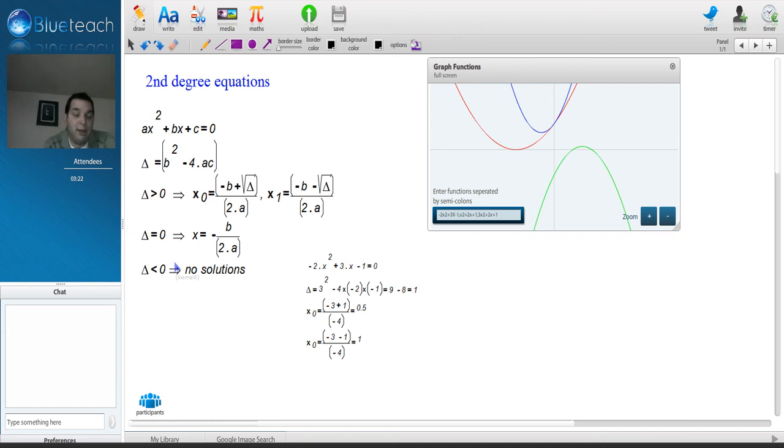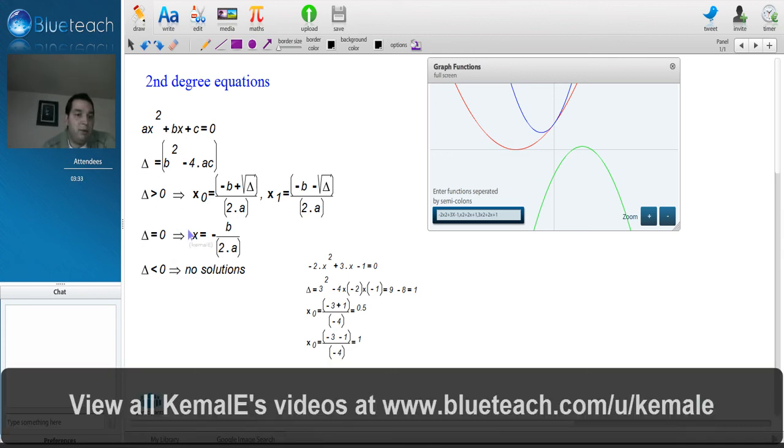So remember, if you find something that looks like ax² + bx + c = 0, all you need to remember is this little cheat sheet. And you can also print it if you want to keep it for further uses. So, see you later. Bye-bye.